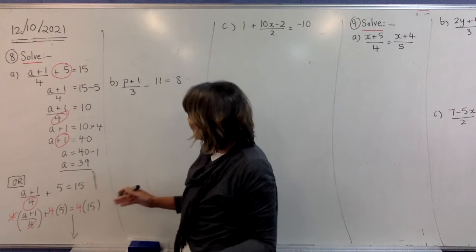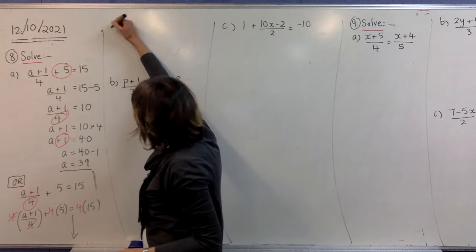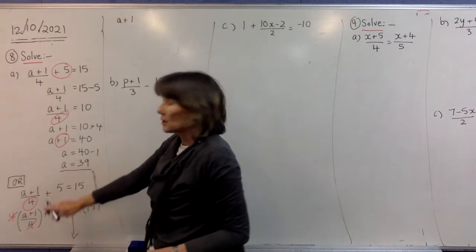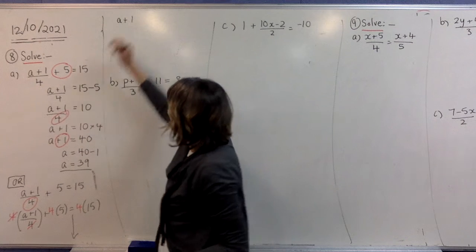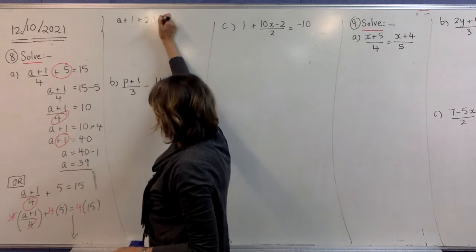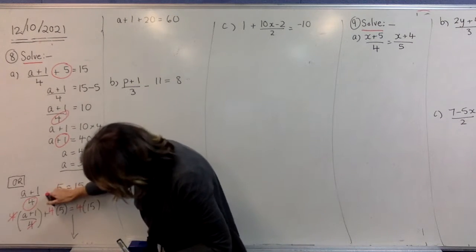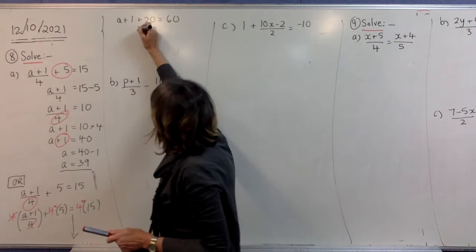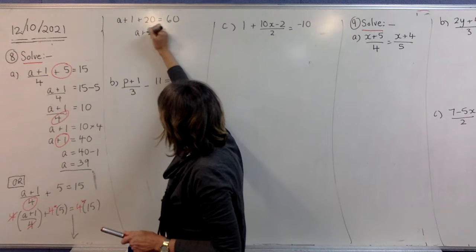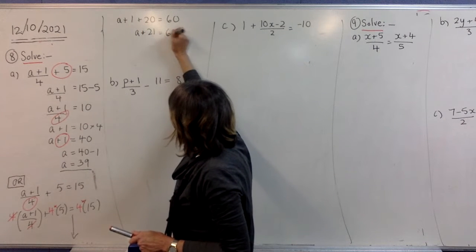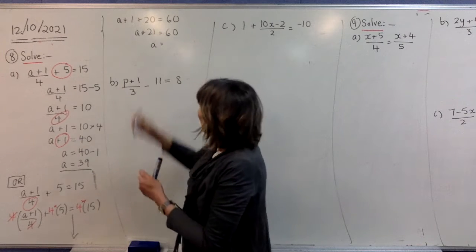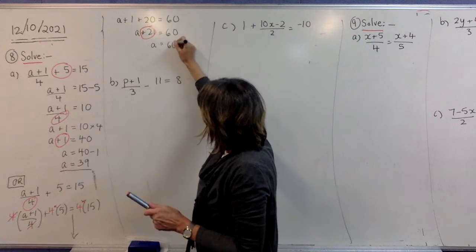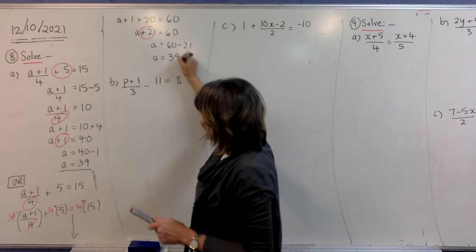So you do have options with that one. I'll just do the last few lines. There's nothing outside that bracket to multiply by, so I'm just going to write it like that. These terms are just being multiplied: 4 times 5 is 20, and 4 times 15 is 60. At that point you collect your like terms on the same side. Then you move the plus 21 to the other side to become minus 21, and you would end up with the exact same answer, a equals 39.